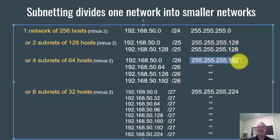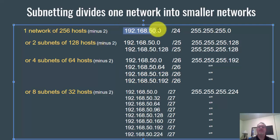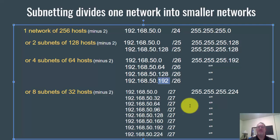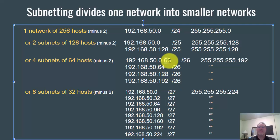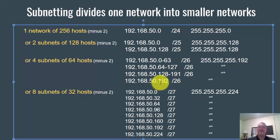They all share the same subnet mask in decimal. What's interesting is you've created four smaller networks from the one original network. Also, a network address doesn't have to end in 0 — here the network addresses are .64, .128, and .192. And the broadcast addresses: the .0 network runs 0–63, so 63 is the broadcast. The .64 network runs 64–127, broadcast is 127. The .128 network runs 128–191, broadcast is 191. The .192 network runs 192–255, broadcast is 255.